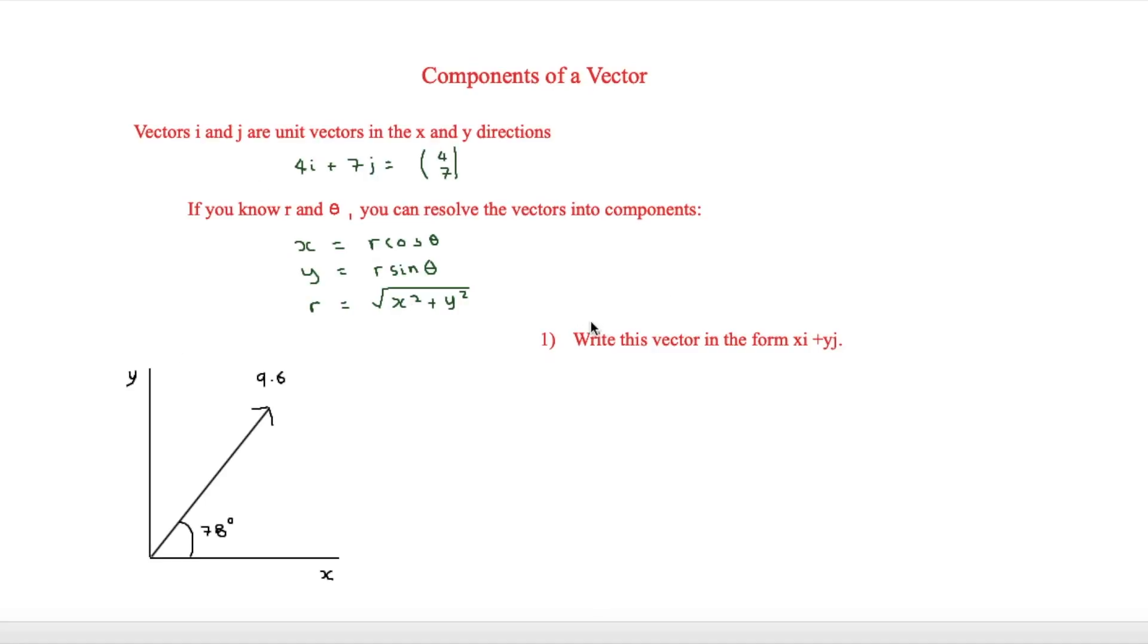So here we have a question and this is write this vector in the form xi plus yj. So what we're going to start by doing is working out what x is and working out what y is. So if we're going to try and work out x, we'll say x is equal to r cos theta.